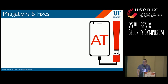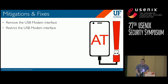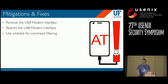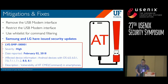Now let's talk about mitigations and fixes. From the vendors' perspective, the most straightforward fix is to remove the USB modem interface, since normal users are unlikely to need this functionality. Where it's impossible to remove, access should be restricted — just as rooting is required to access it on some devices. Another good security mechanism is whitelisting: by default, all AT commands should be blocked unless explicitly permitted. From a user's perspective, both Samsung and LG have issued security updates since we reported these vulnerabilities in February. If you have an Android phone, please update your Android.